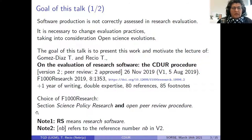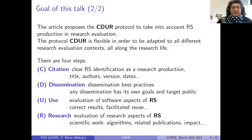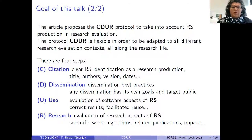We wrote this work because we understood that software production is not currently assessed in research evaluation, and we need to place this problem in the context of open science evolutions. We chose this journal because it has a science policy research section and also because of its open peer review procedure, which is very important for us. The goal of this talk is to present this protocol, which is very flexible and has four steps: Citation, Dissemination, Use, and Research.